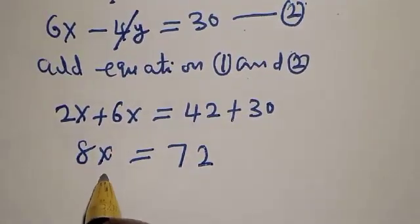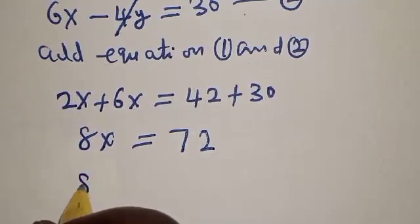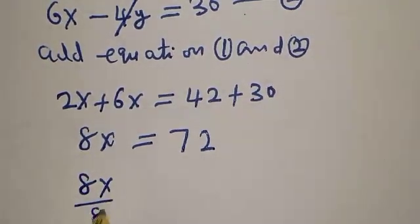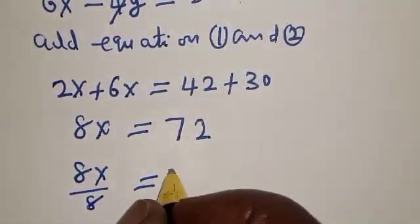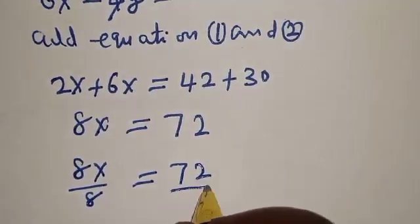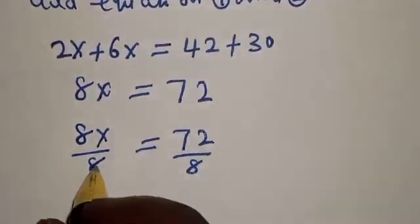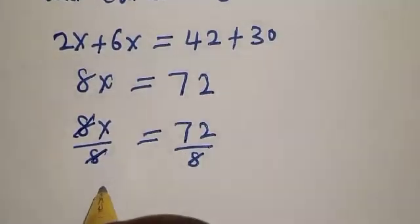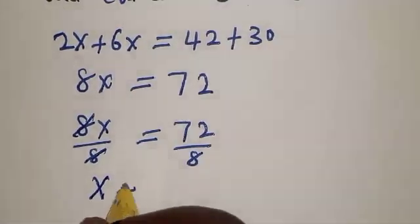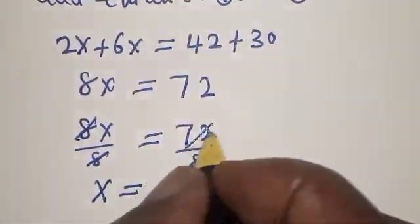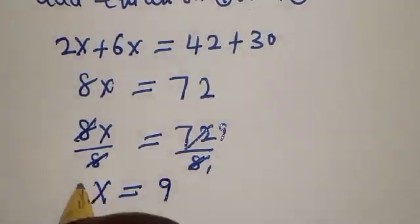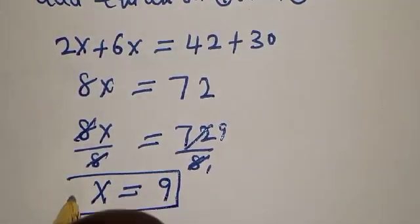Now, let's divide both sides by 8. 8x divided by 8 equals 72 divided by 8. This one will cancel this, giving x equals 9. That is the value of x.